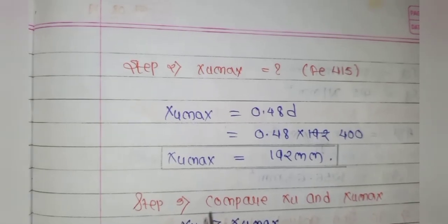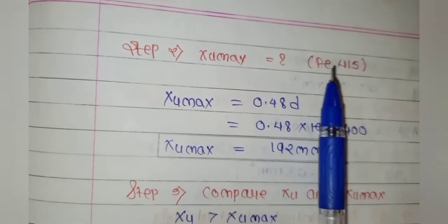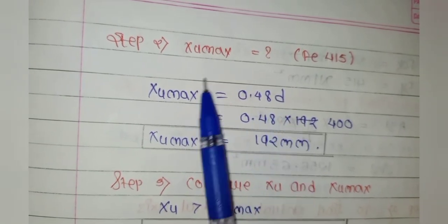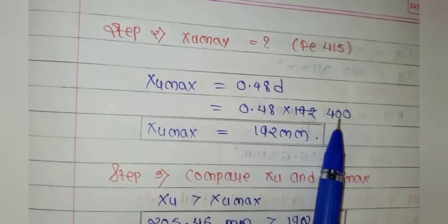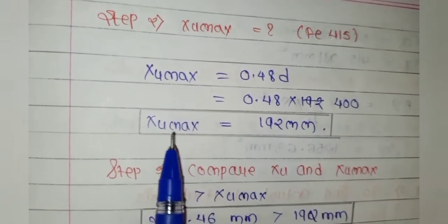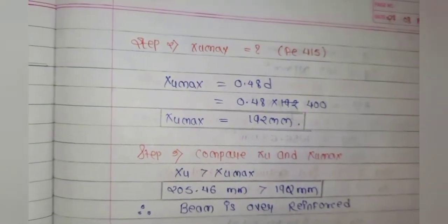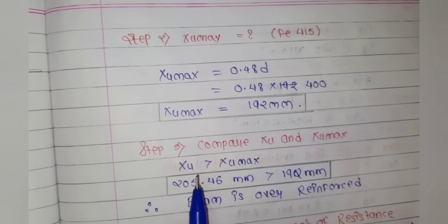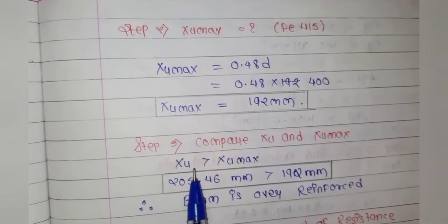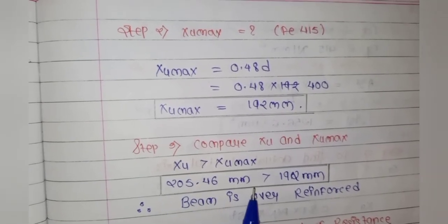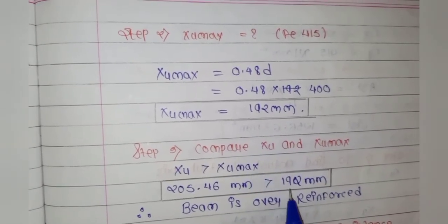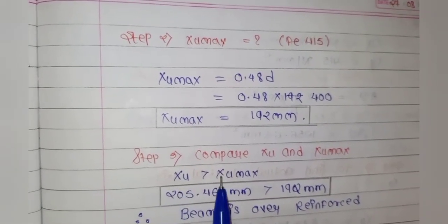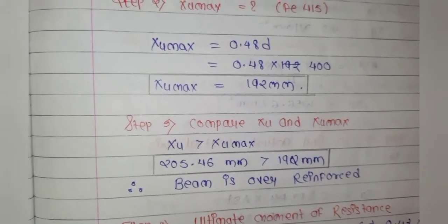Step 2: XUmax from table. For Fe415, XUmax = 0.48D = 0.48 × 400 = 192 mm. Step 3: Compare XU and XUmax. XU = 205.46 mm and XUmax = 192 mm. Since XU > XUmax, the beam is over reinforced.